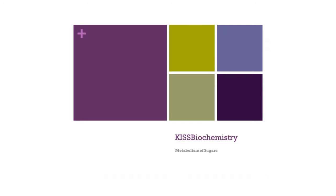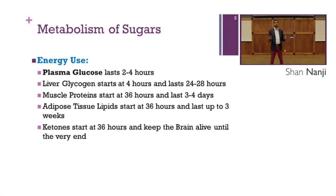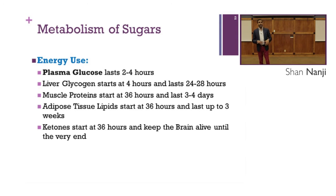Welcome to Keeping it Simple, a series for biochemistry. We're going to start off by talking about our favorite slide on energy use. Plasma glucose lasts two to four hours; liver glycogen starts at four hours and lasts 24 to 28 hours — some books say 24 to 36 hours. Muscle protein starts at 36 hours and lasts three to four days. Adipose tissue lipids start at 36 hours and last up to three weeks. Ketones start at 36 hours and keep the brain alive until the very end. We start all of biochemistry with glucose. Whether in an anabolic or catabolic state, we always need to either store glucose or break it down into energy — the most used form being ATP.